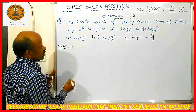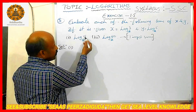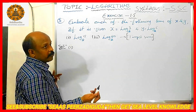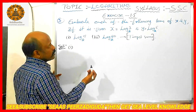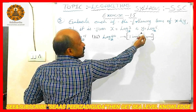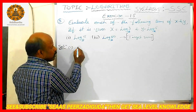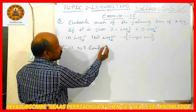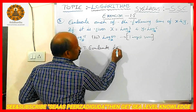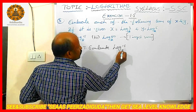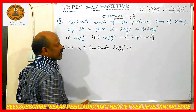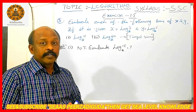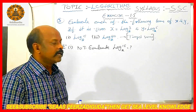First one. What is first one over here? Log 15 base 2. Log 15 base 2 — this one, what should we do? We have to evaluate. We have to write in terms of x and y. Now we observe, to evaluate log 15 base 2, by evaluating, we have to write in terms of x and y.